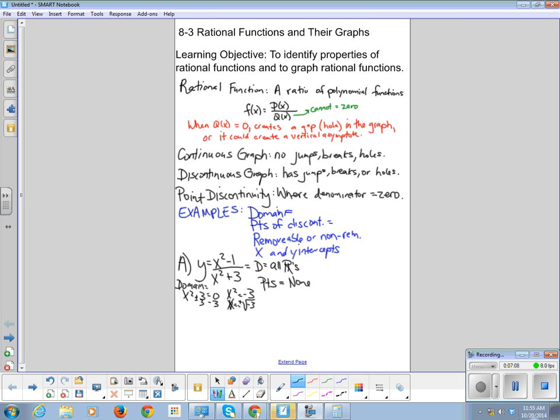And x and y intercepts. Well the x intercept is when y is equal to 0. So imagine I multiply both sides by x squared plus 3. What is 0 times anything? 0. And I add 1 to both sides. For what values is x squared equal to 1? 1 and negative 1. So those are my x intercepts at 1, 0 and negative 1, 0.